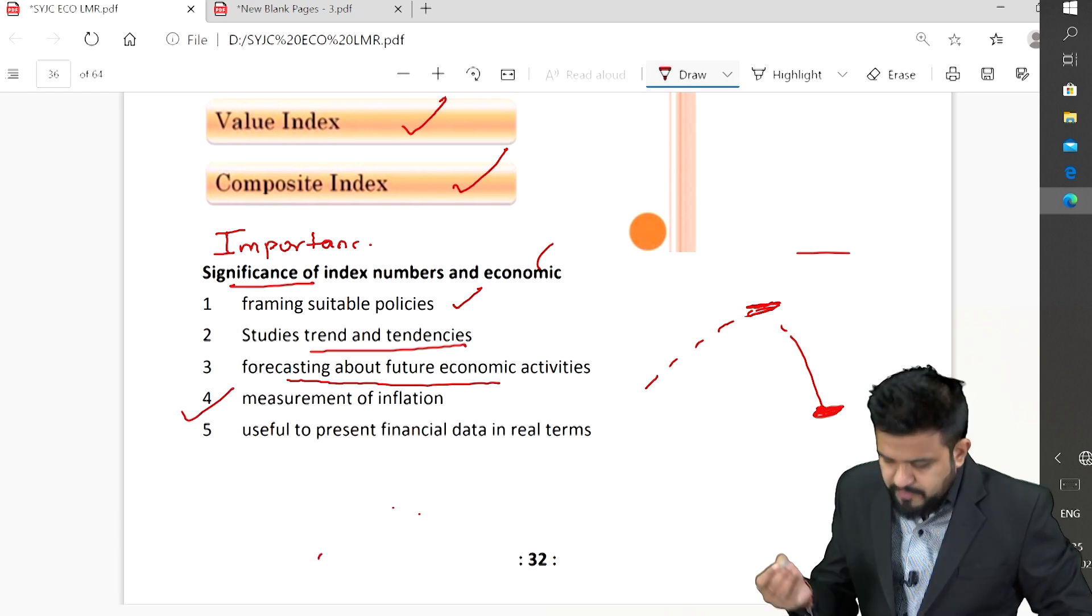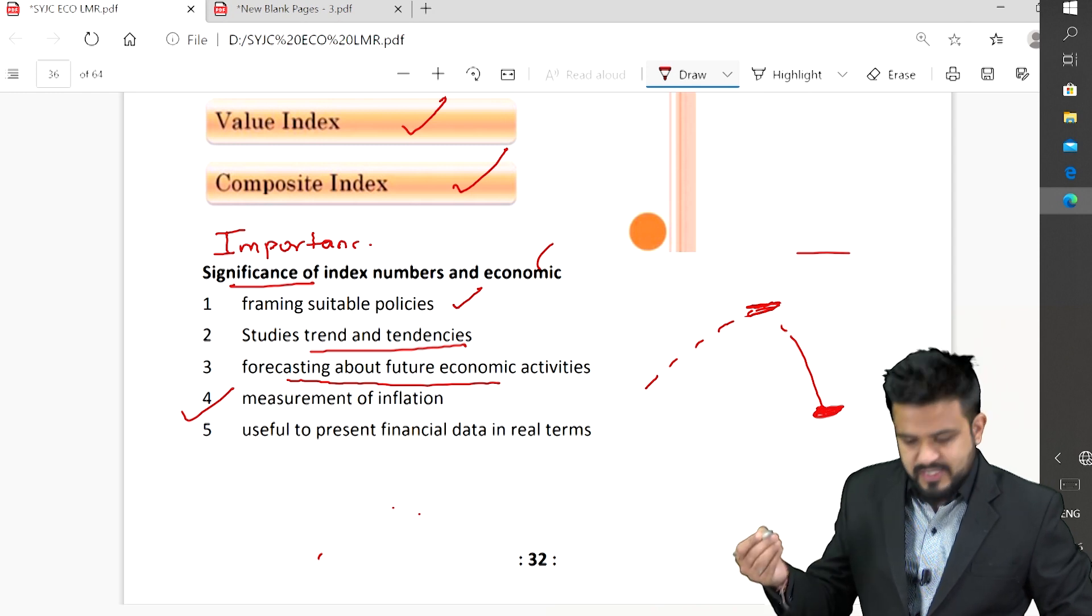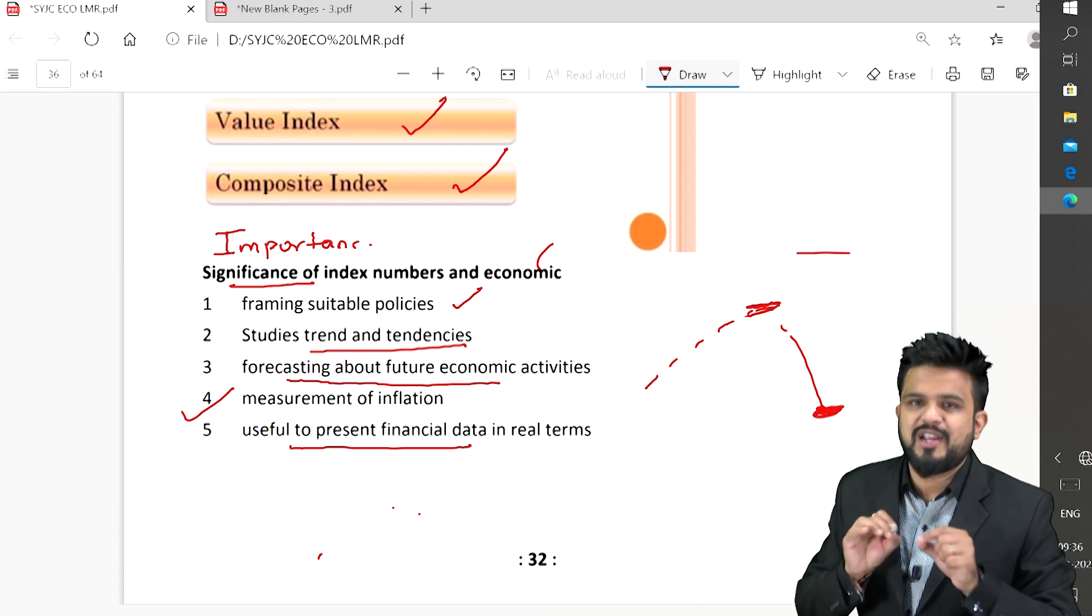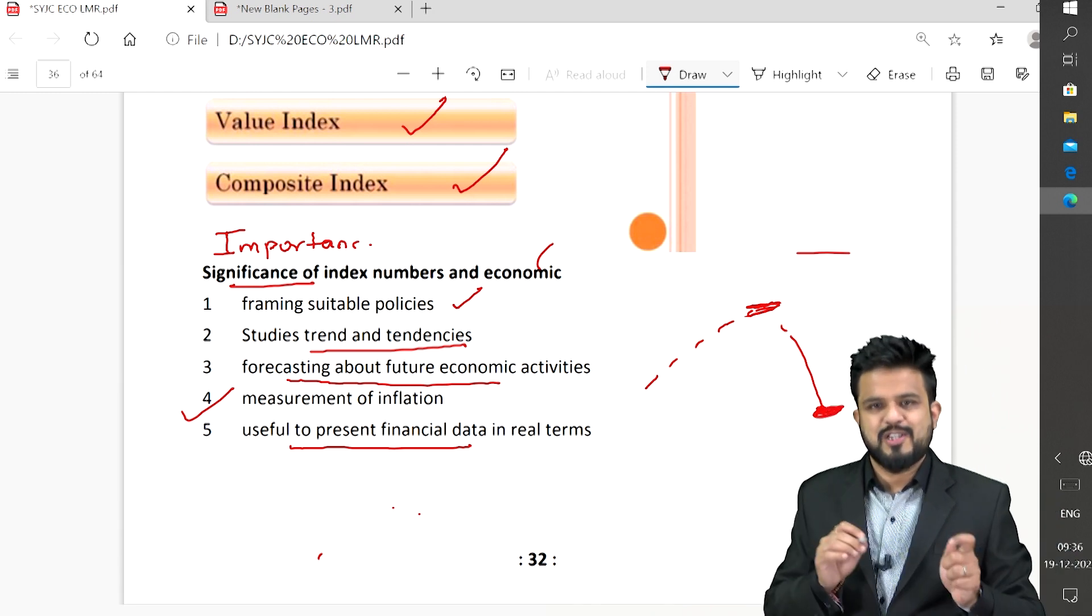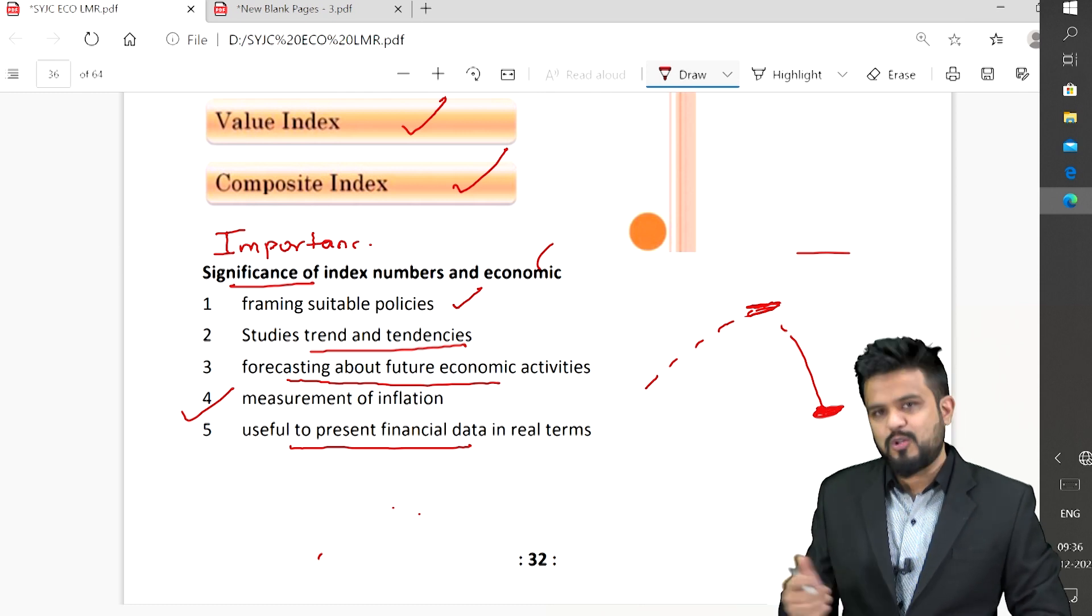Also helpful in measurement of inflation: WPI, CPI, Wholesale Price Index, Consumer Price Index. Useful to present financial data in real terms, that is your national income, GDP, personal income, profits of the companies, all those things.